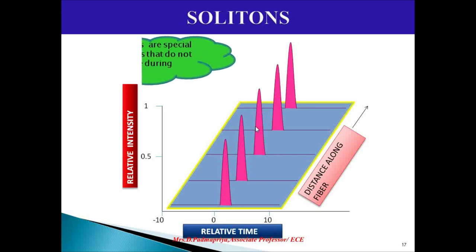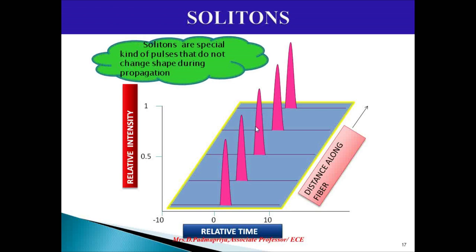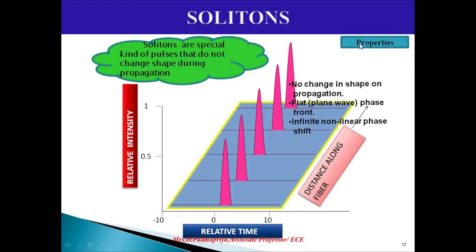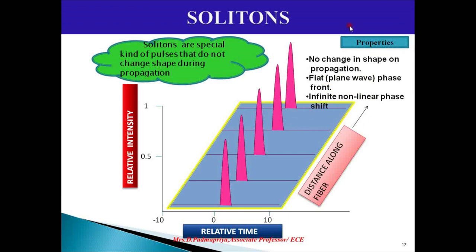Solitons are special kinds of pulses or self-trapped beams that do not change shape during propagation. The properties of solitons are: they do not change in shape when propagating through the fiber, they have a flat plane wave phase front, and they have an infinite non-linear phase shift.